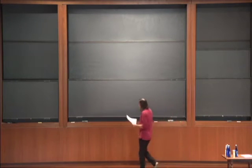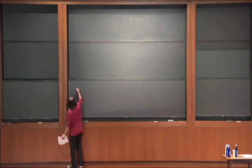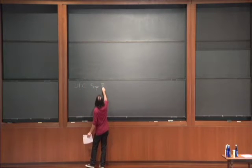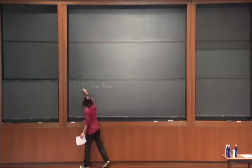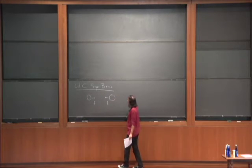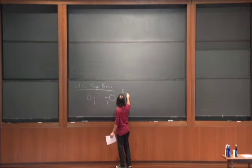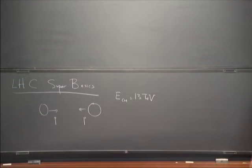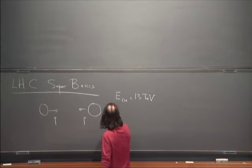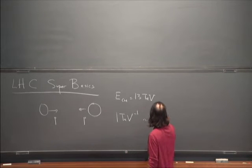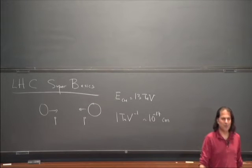Those are the two things I want to do in this lecture. Part one is just LHC super basics. So the most basic of all: proton-proton collisions. The center of mass energy is supposed to be 14 TeV, but let's call it 13, which is what it's going to be when we turn back on again. One TeV inverse is around 10 to the minus 17 centimeters — that's the conversion you all know by heart.